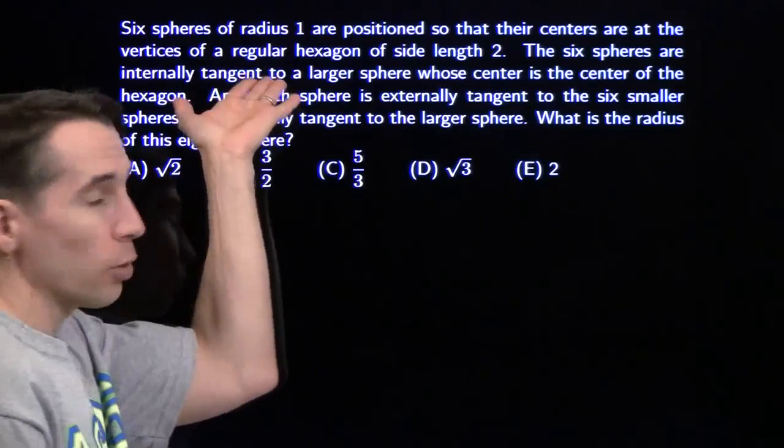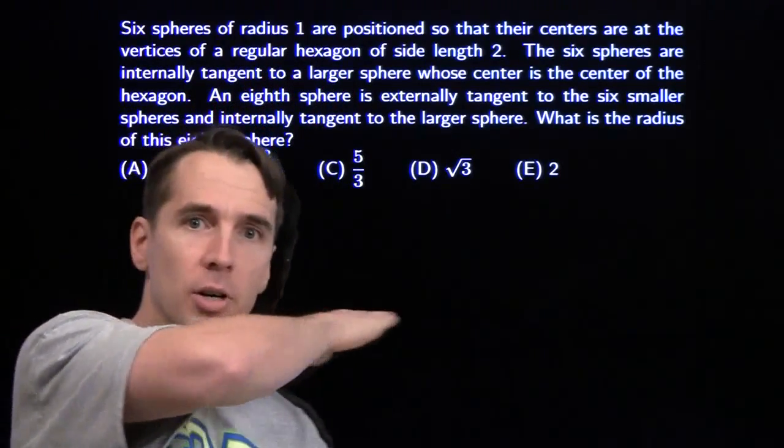Now, a natural place to start here is the hexagon. We take the cross section with the hexagon because that's going to go through the centers of 7 of these spheres and all kinds of points of tangency.